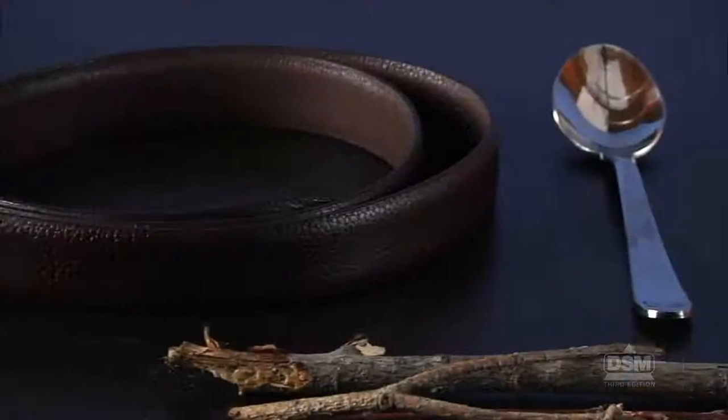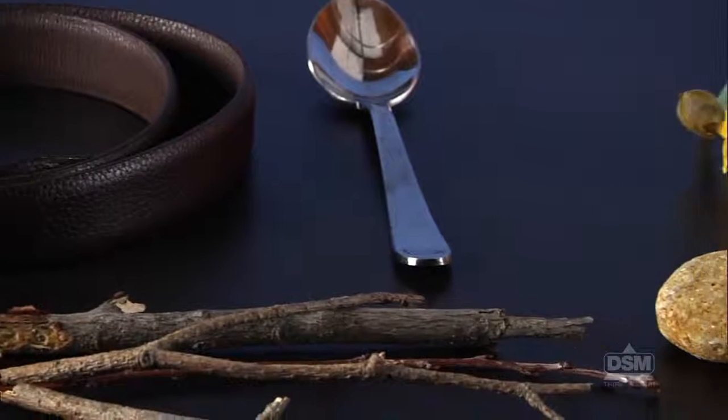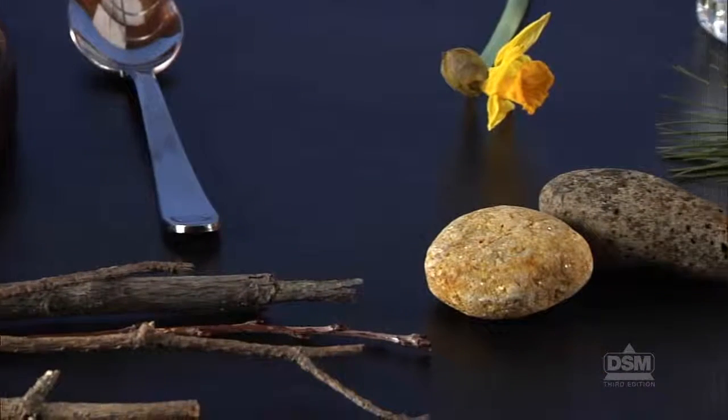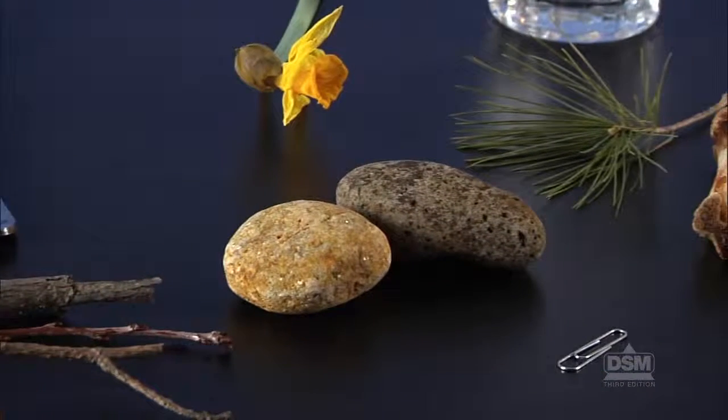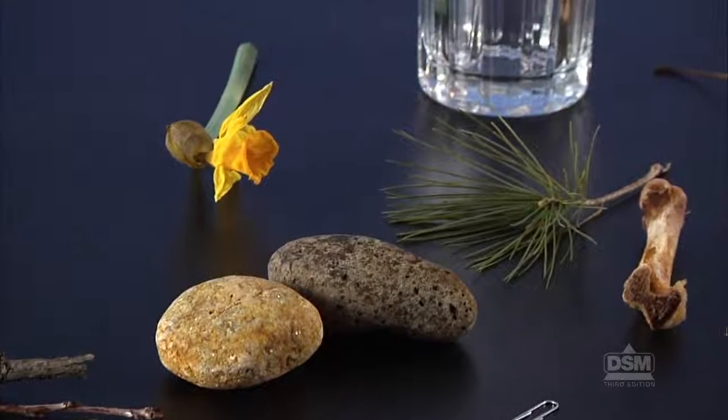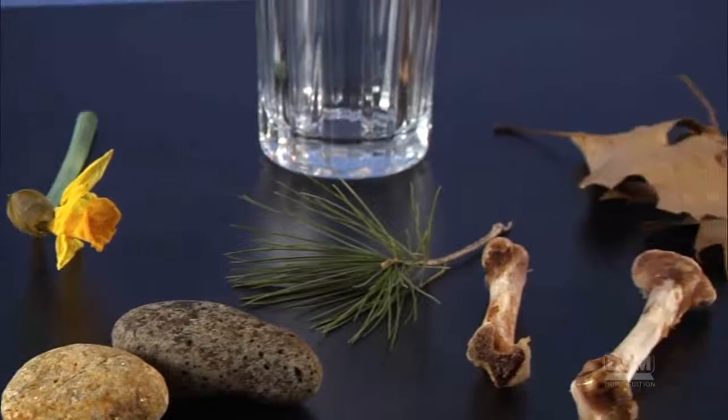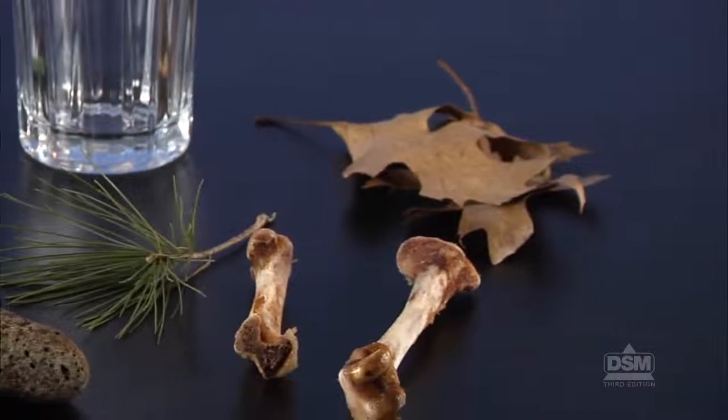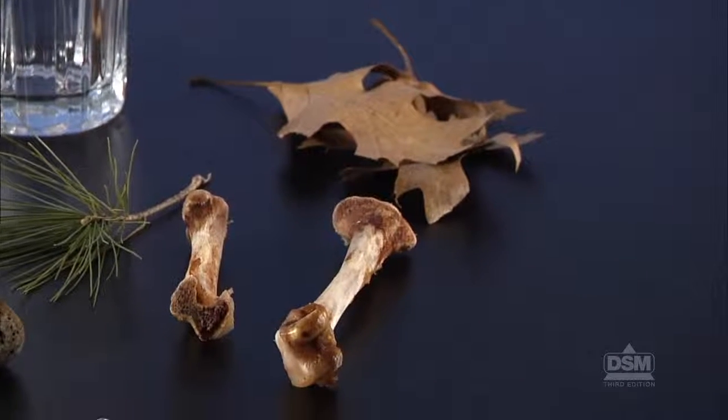Also, collect a variety of nonliving objects, such as a stone, a metal spoon, a glass, a shoe, or a paper clip, and a variety of parts from dead plants and animals, such as dried leaves, a dead twig, or a chicken bone.